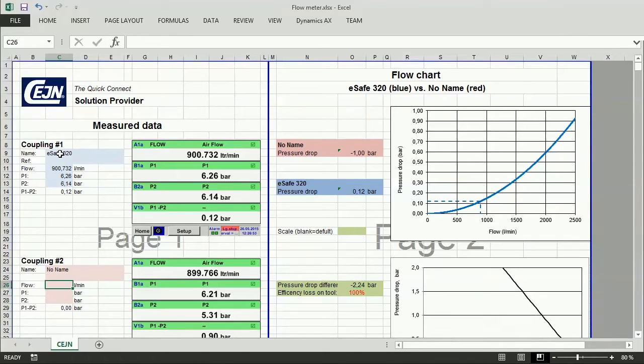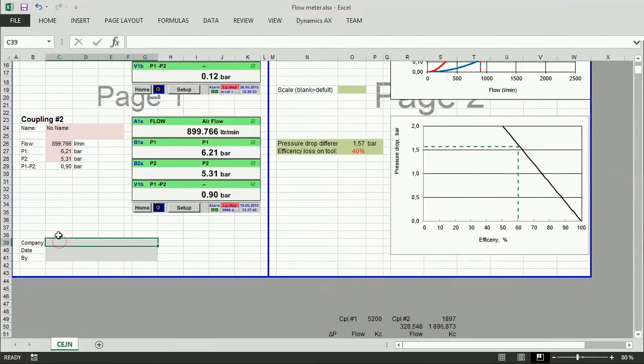On the right side, you can see the graph showing you all the flow in the system as well as the efficiency loss of the tool. Key in the company name, date and done by.